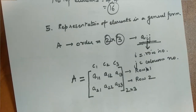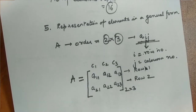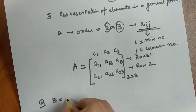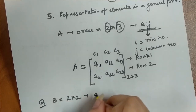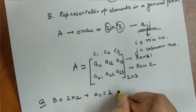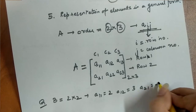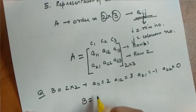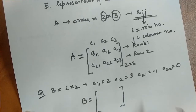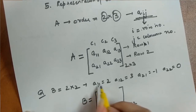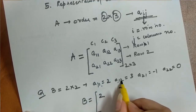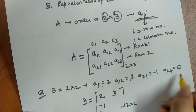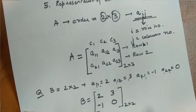In some questions we are given element values using this notation, and we must construct the matrix. For example, matrix B has order 2×2 with: a_11 = 2, a_12 = 3, a_21 = -1, a_22 = 0. We construct matrix B of order 2×2 by placing each value at its row-column position: row 1 column 1 is 2, row 1 column 2 is 3, row 2 column 1 is -1, row 2 column 2 is 0. This represents our matrix. I hope the general notation form is now clear.